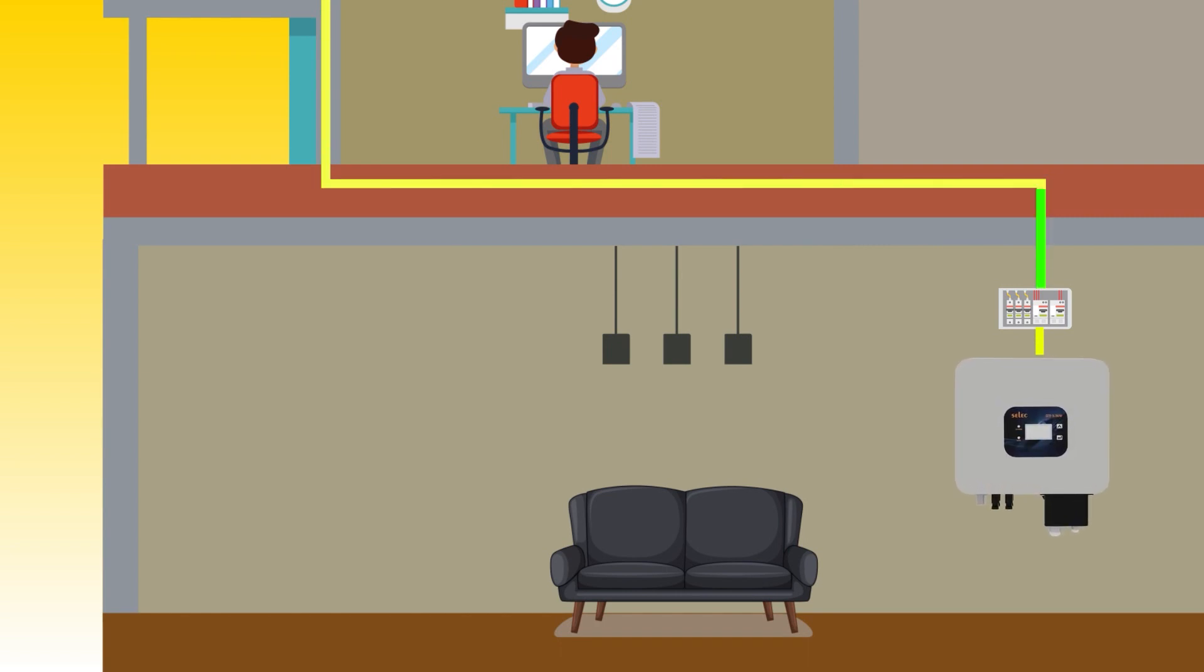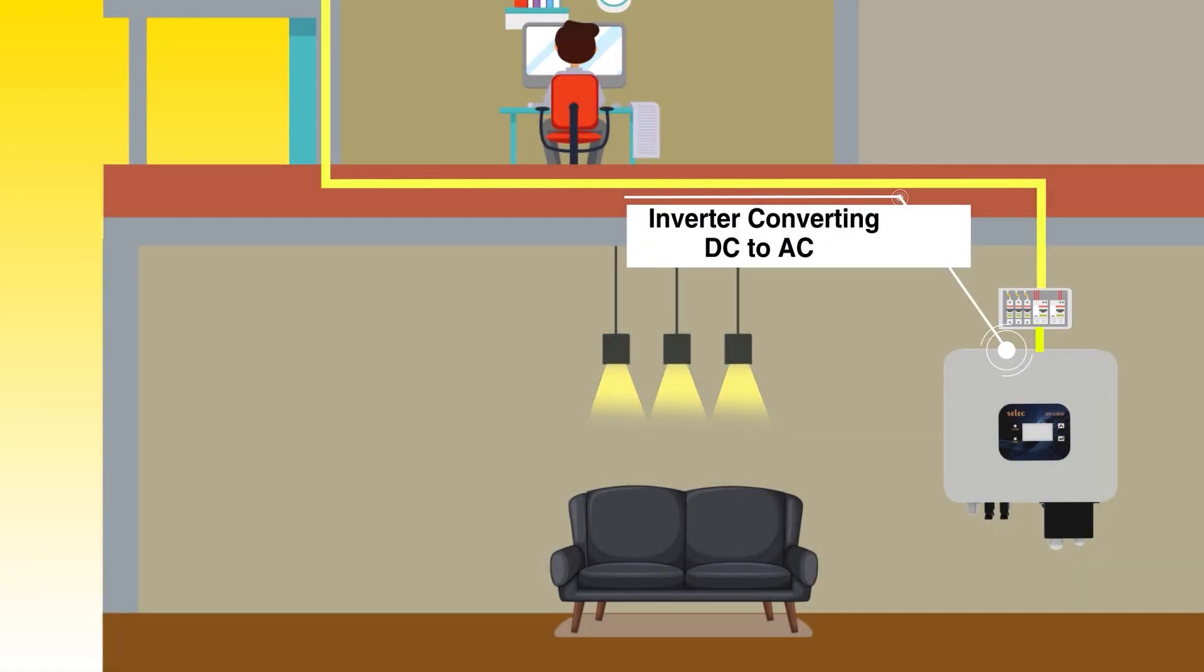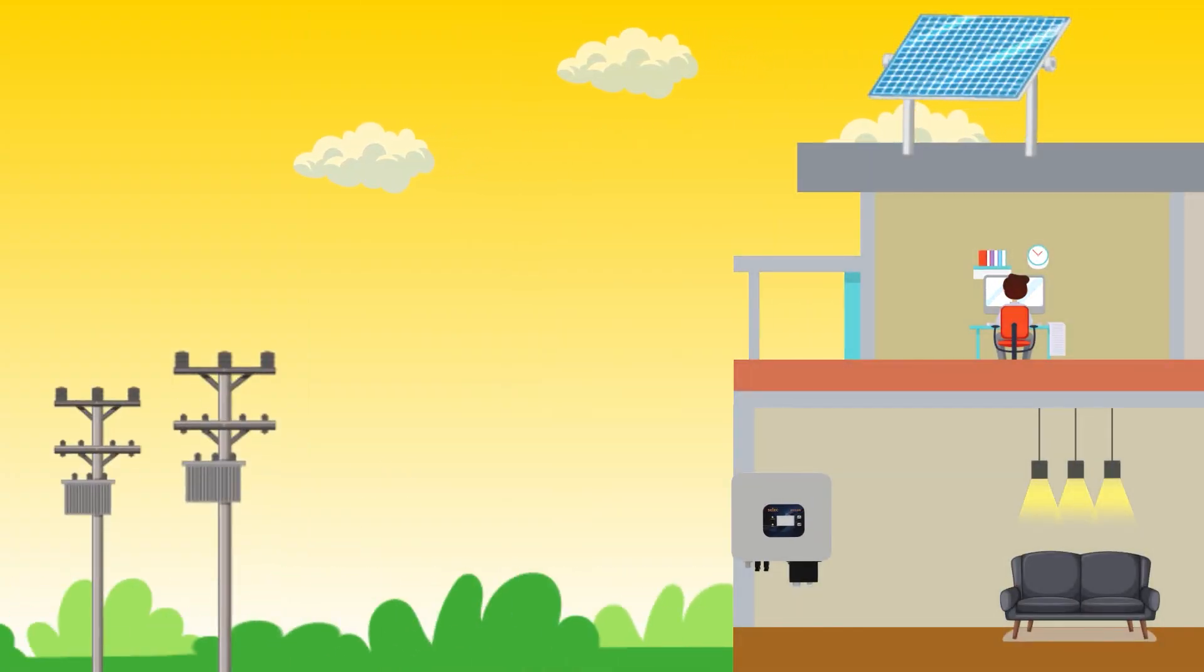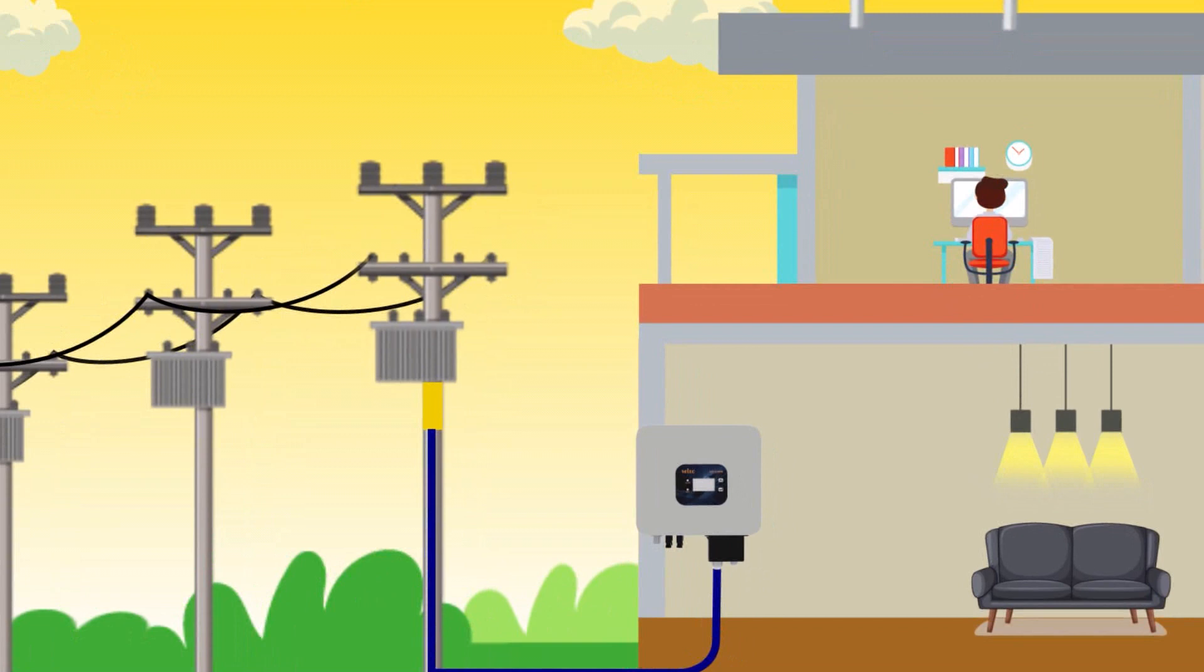On-grid solar inverters convert the direct current from solar panels into alternating current that can be used to power electrical appliances or sent back to the grid. On-grid inverters are designed to work with utility grids. They allow you to use the solar energy generated during the day and to sell any excess energy back to the grid.